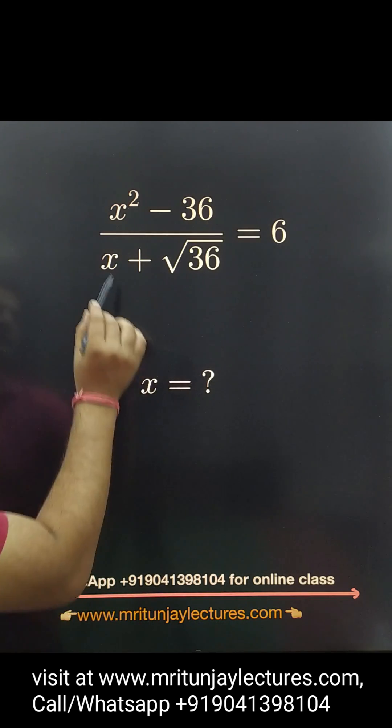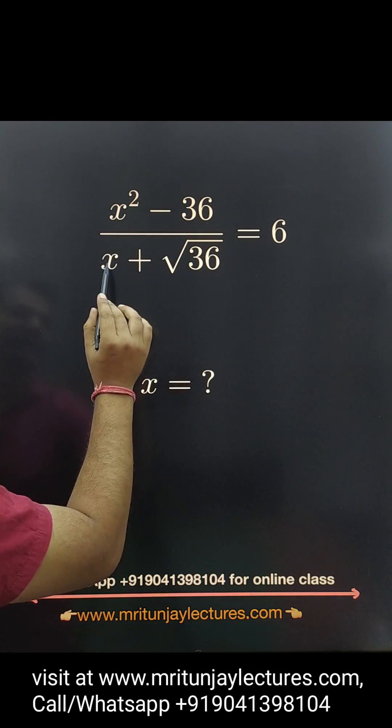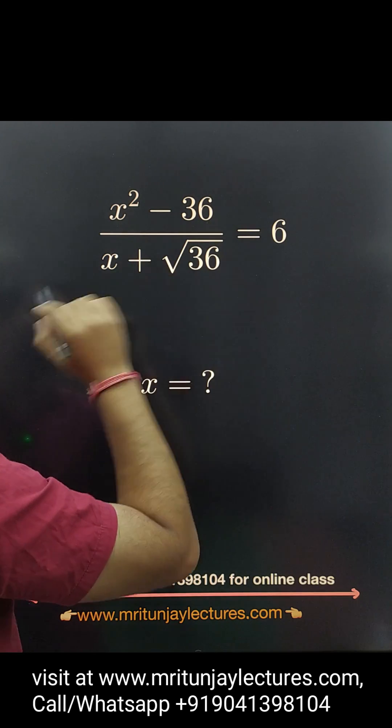Question of the day: How to determine x? Here, x² - 36 divided by x + √36 equals 6.